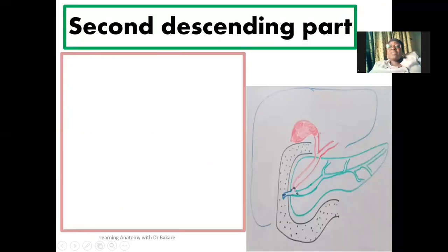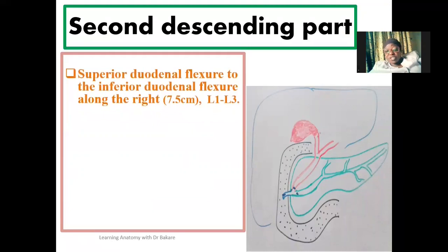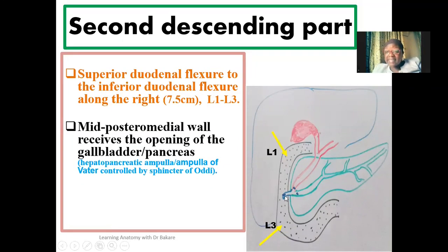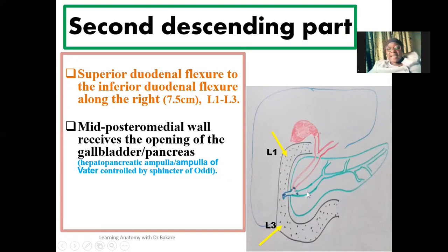The second region is the second descending portion of the duodenum. Superiorly we have the superior duodenal flexure, and inferiorly we have the inferior duodenal flexure. In between these flexure points is the second descending region, which corresponds to the L1 to L3 lumbar vertebrae. At the midpoint of the posterior medial wall of the second descending part is where we have the emptying of the bile duct and also the pancreatic duct.